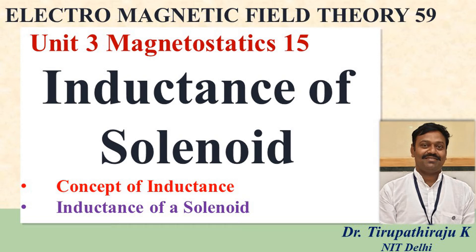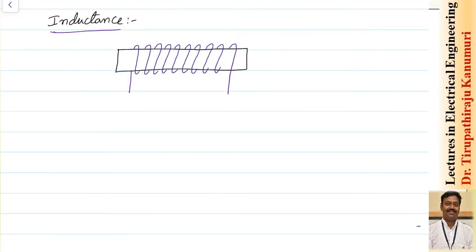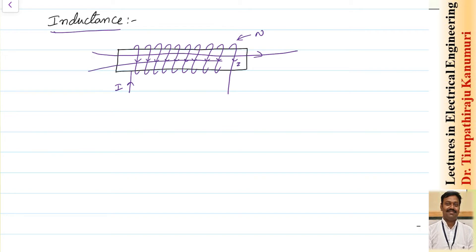Today we are going to discuss inductance and the inductance of the solenoid. Let us take for example an N-turn coil — assume there are N turns wound on some core. When current I passes through them, it returns back, so every conductor is carrying a current of I. The flux produced by this solenoid we are going to prove in today's class.